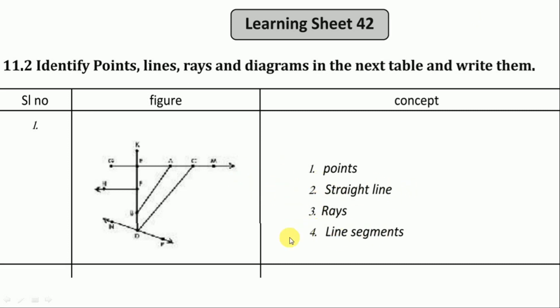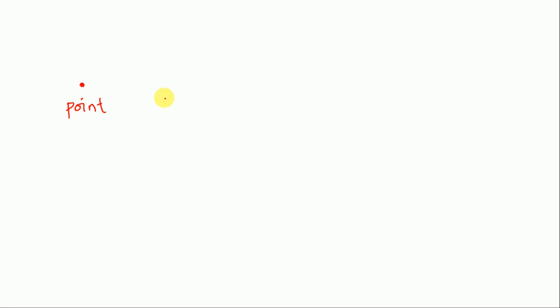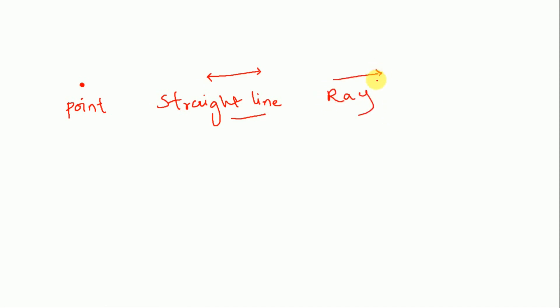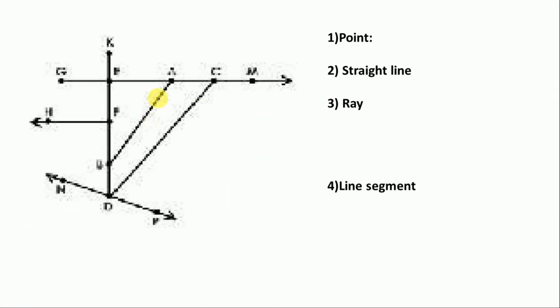Before going to solve these, let's see how to recognize these figures. To recognize a point, it is like a dot. For a straight line, we have to see two arrow marks. For a ray, one arrow mark and one dot. Next is a line segment — a line with two points. This is how we identify these in a figure. Let's move to the first figure.